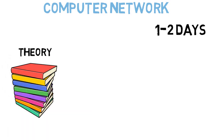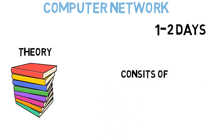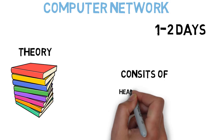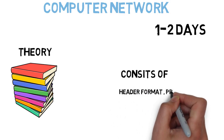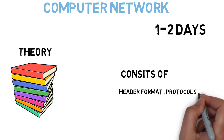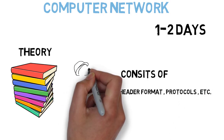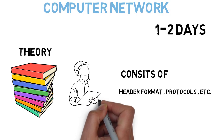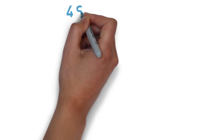These four sections will cover all the important questions of Computer Networks. As you know, Computer Networks is basically a theory subject consisting of networking problems, header formats, protocols, etc. It is a really scoring subject, so if you try to cover all the important questions we give you, you will surely score more than 60 in this subject.